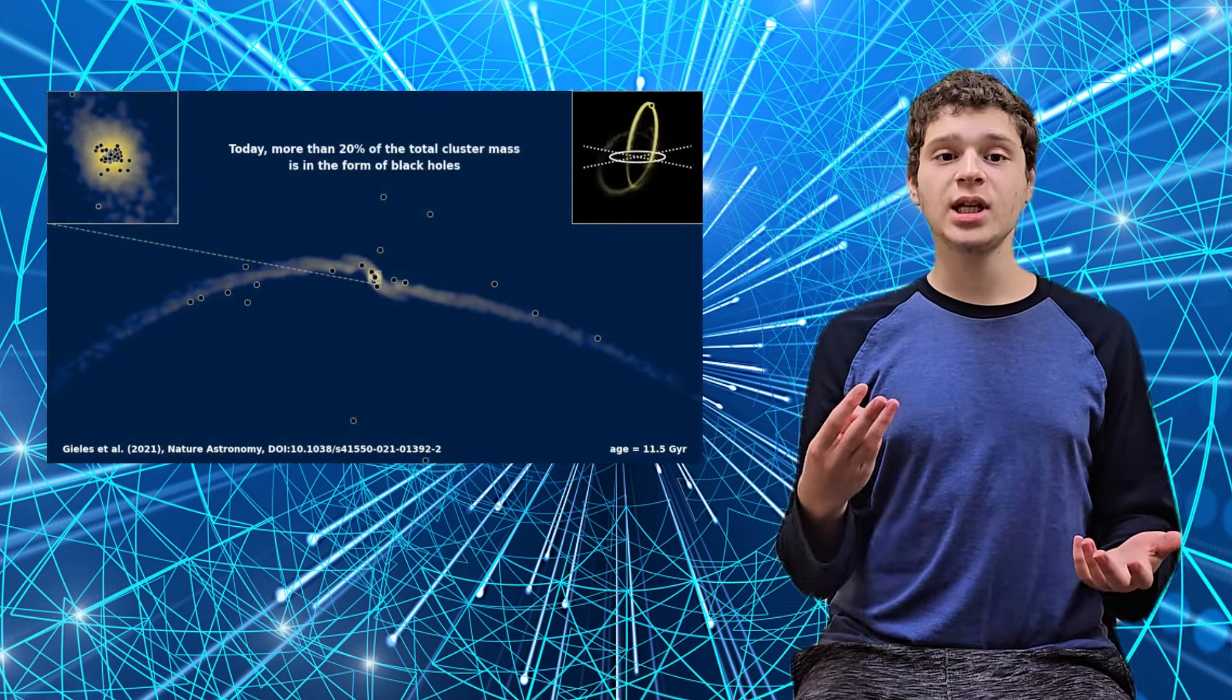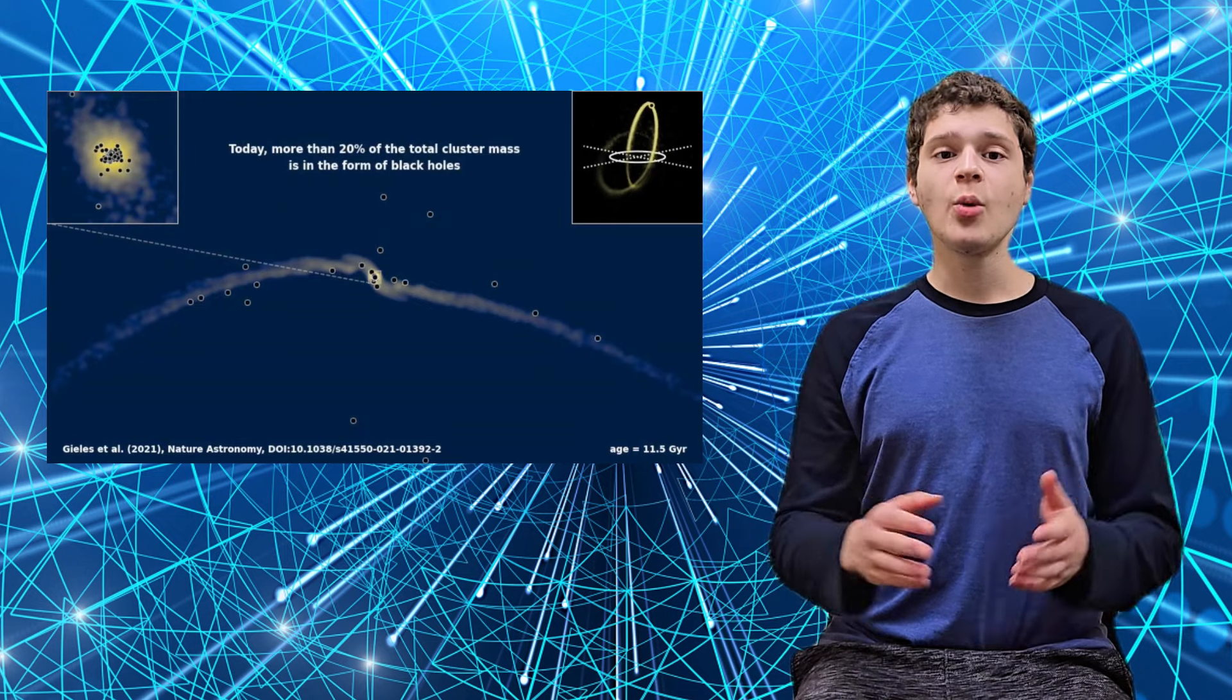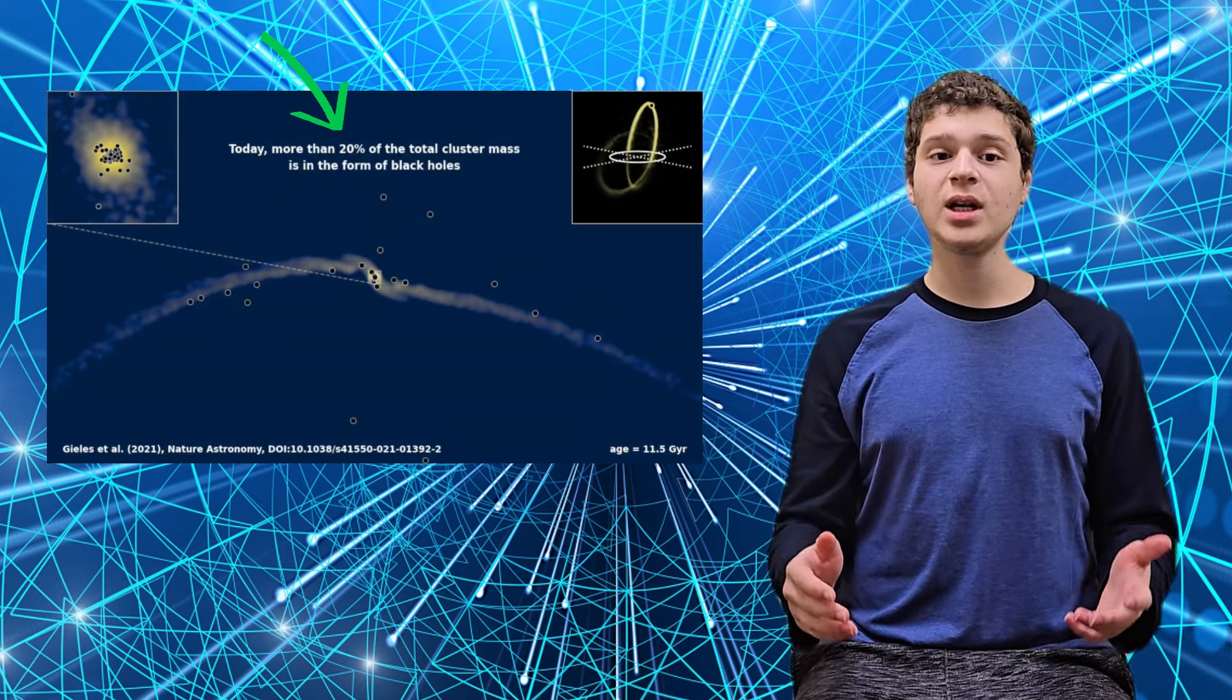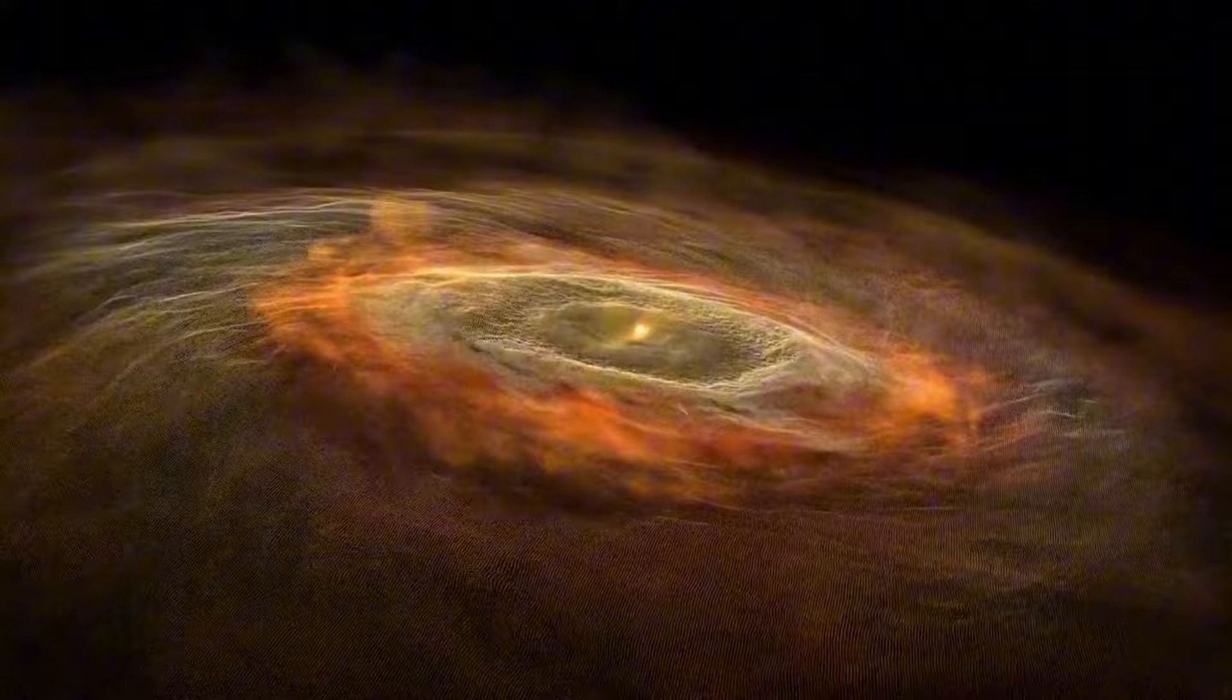According to Gilles, the cluster has three times more black holes than predicted, with over 20% of its mass made up of black holes. These black holes, each about 20 times the mass of the Sun, formed from supernova explosions when the cluster was still young.